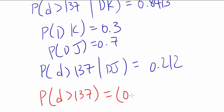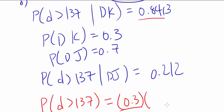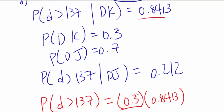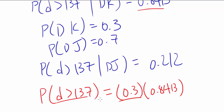Well, you gotta pick the melon from distributor K, and from that melon, it has to have diameter of more than 137. So that's the probability that the diameter is going to be more than 137 and it's going to be distributor K.